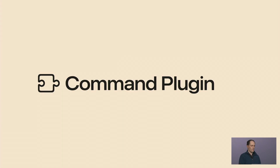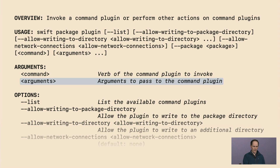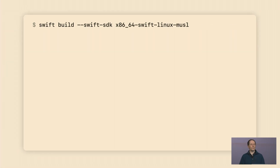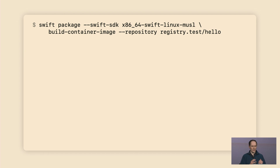We can do that by writing a command plugin, which have shown up a couple of times so far today. Command plugins have been part of Swift Package Manager for a few releases now, and they let us extend it to suit our own requirements — we can add our own commands and our own arguments. And the command plugin looks almost like a built-in command. If you remember the Swift Build command we saw a moment ago, it only takes a couple of changes to use the plugin instead. First, we change Swift Build into Swift Package and we keep the SDK flag because we still want to cross-compile. Then we call our plugin, which we've creatively named Build Container Image. But instead of talking about it, let's try it out.